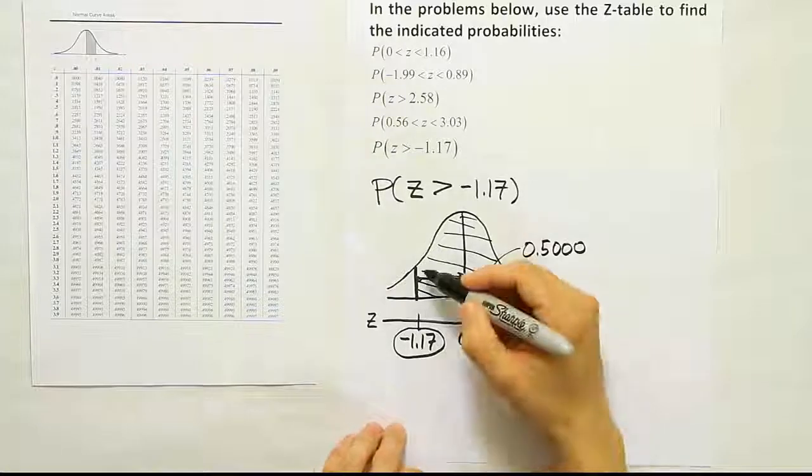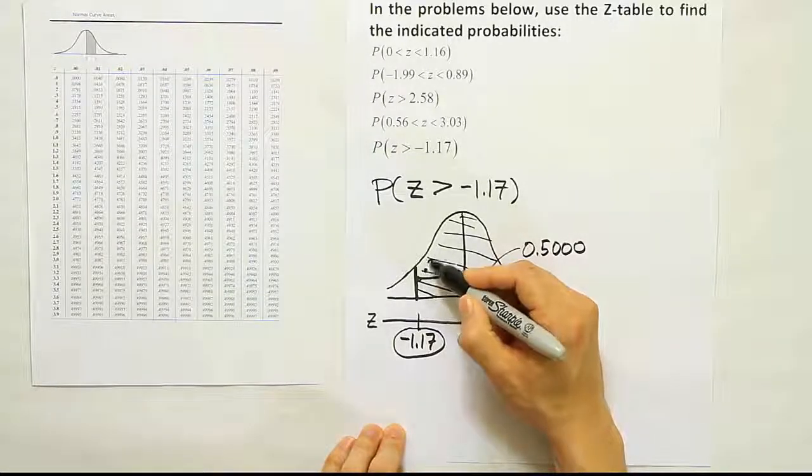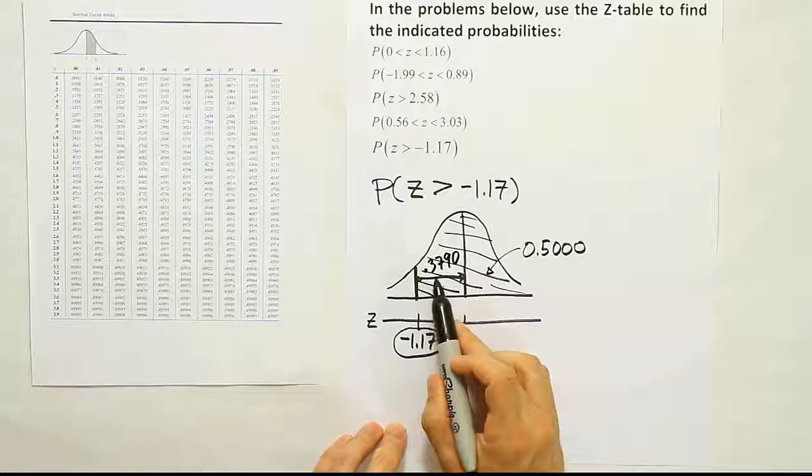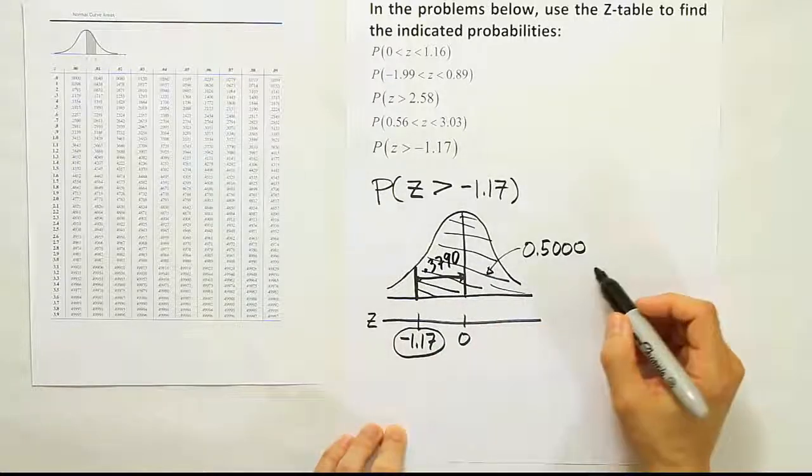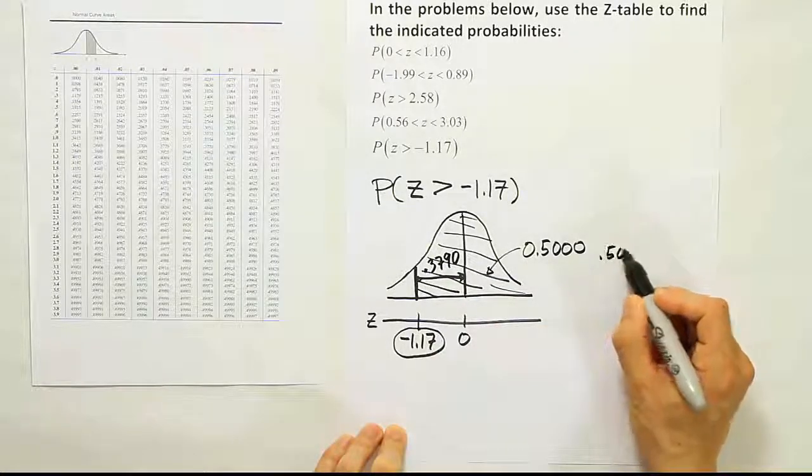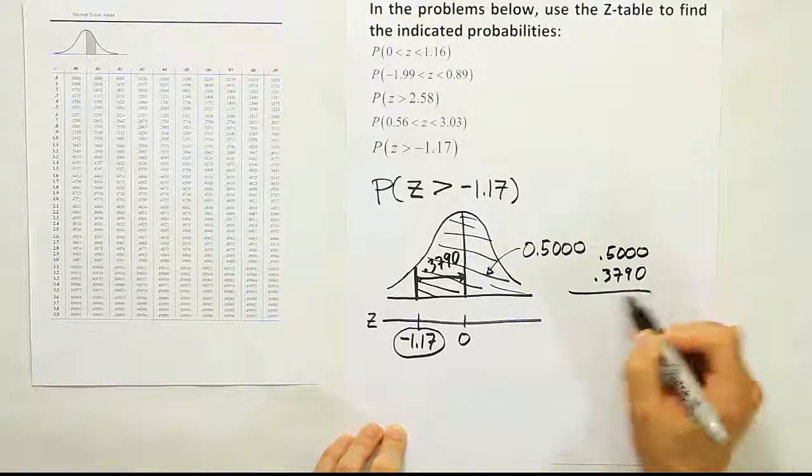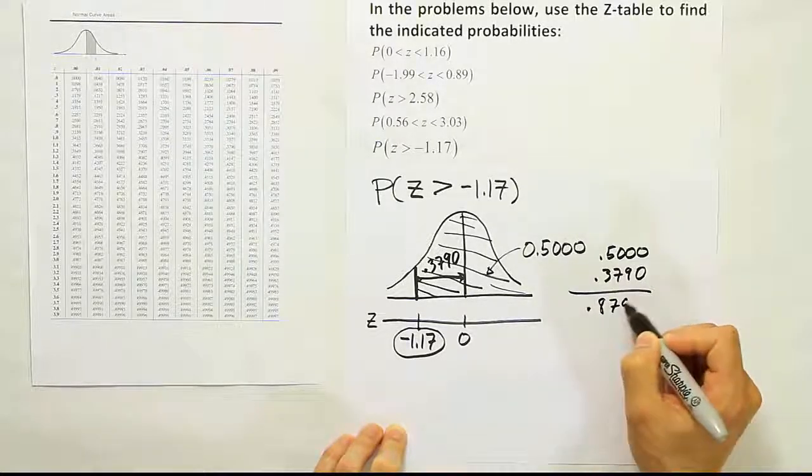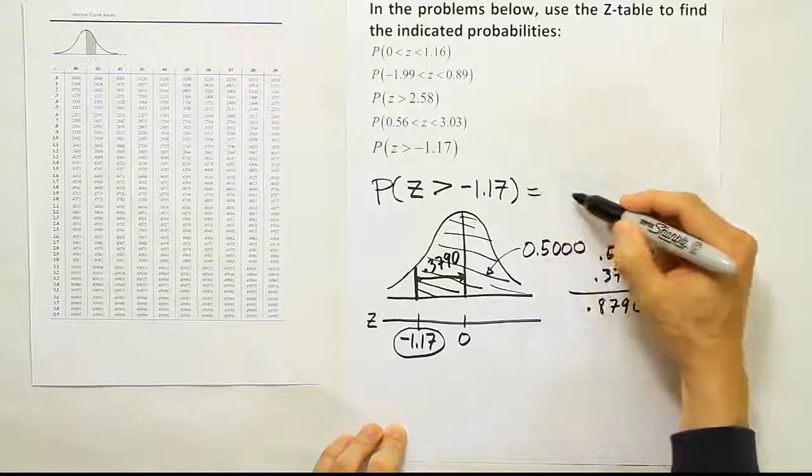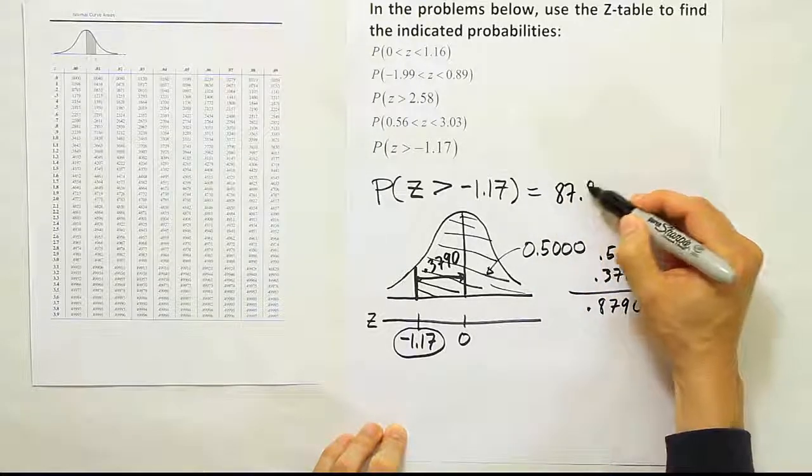Now that we found this area to be 0.3790, we can take these two values and add them together to get our final answer. So it would be 0.5000 plus 0.3790, and of course that gives you 0.8790. So the total answer is 87.9%.